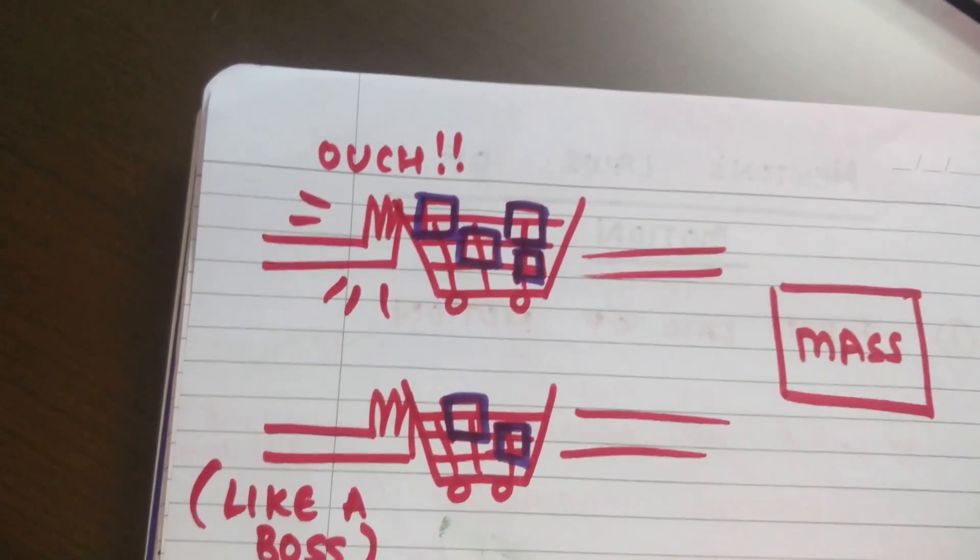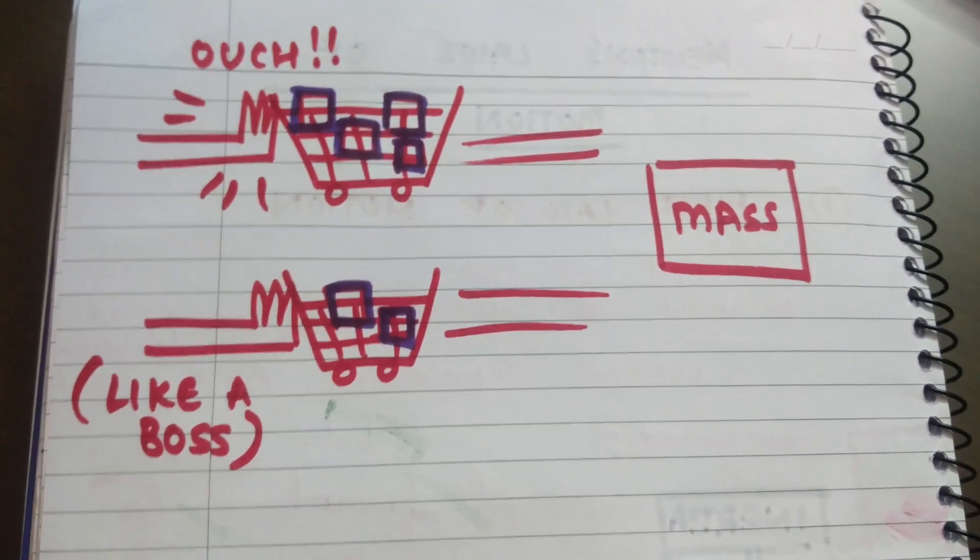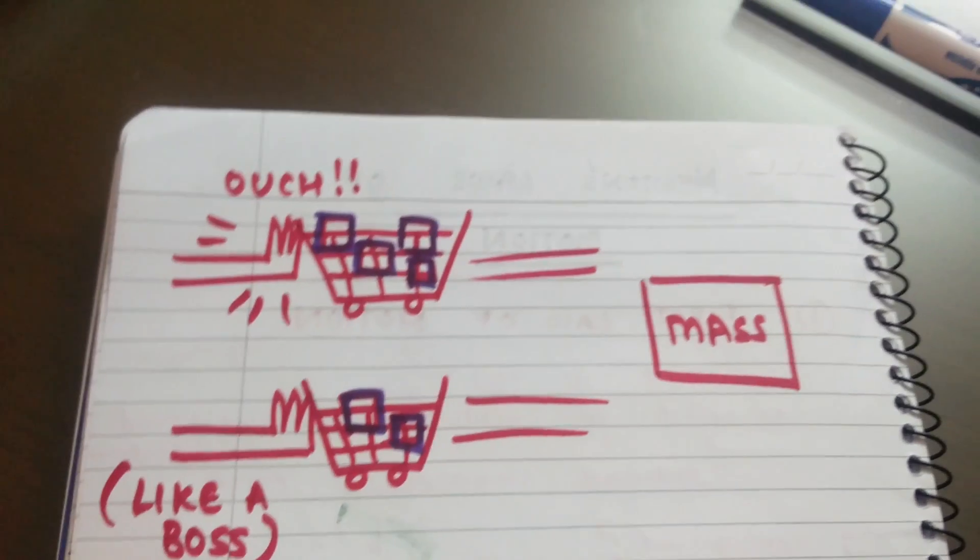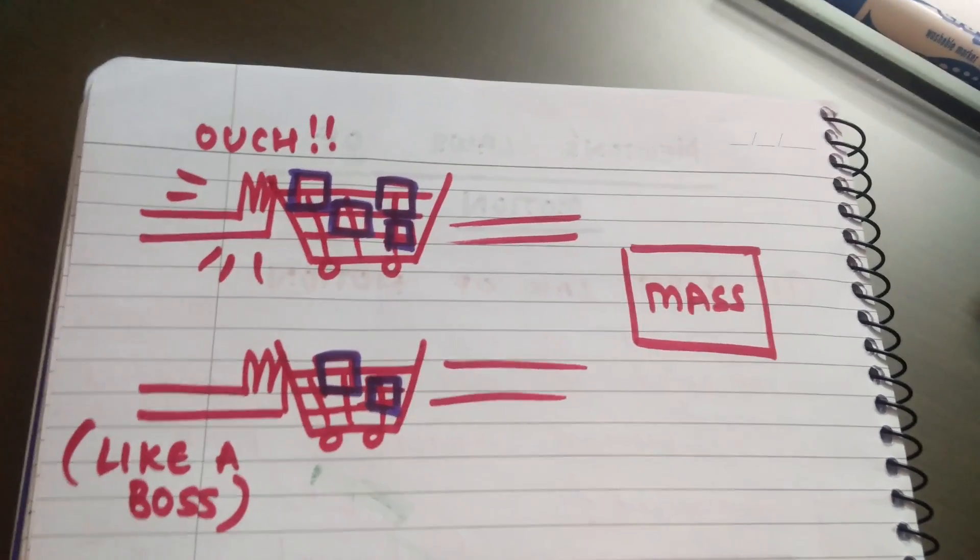Say I have two trolleys. One trolley has got a lot of goods inside it and the other one has relatively less goods inside it. Which one is going to be easier to stop? The trolley that is fully loaded or the trolley that is mostly empty?